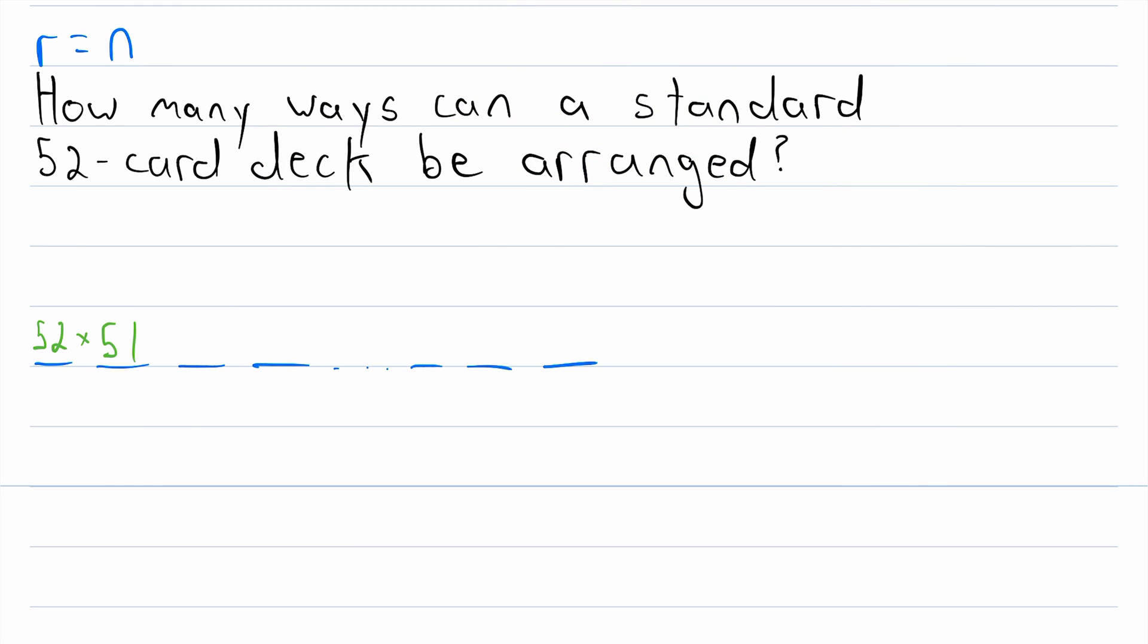Now let's continue. How many cards could be third? Well, we've already used up two of the cards, so now 50 cards remain. There are 50 options for the third card. And this pattern continues. There will be 49 options for the fourth card. And eventually, we'll get all the way down to having just three options, and then just two options, and then just one last remaining card that could go in the last spot. So that is the number of ways a standard 52-card deck can be arranged.